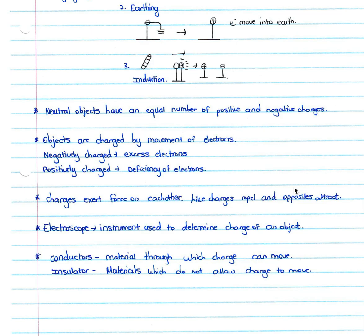We can use an electroscope, which is an instrument used to determine the charge of an object. So if we are unsure whether the charge is positive or negative, we can use an electroscope to determine that. We also need to know the difference between conductors and insulators. A conductor is a material through which charge can move — through which your electrons can move, resulting in a change in the charge of an object. Whereas an insulator is a material which does not allow charge to move, and therefore will not lead to a change in charge of an object.